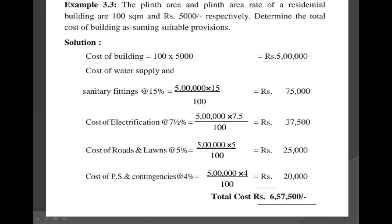Final provision: cost of PFPS means petty supervision and contingency at 4%. Formula: cost of building multiplied by PFPS percentage divided by 100, which is 5 lakhs into 4 divided by 100, equal to 20,000 rupees. So total: add cost of building plus remaining provisions — 5 lakhs plus 75,000 plus 37,500 plus 25,000 plus 20,000. Therefore total cost of the building equals 6 lakh 57,500 rupees. This is the plinth area method problem.